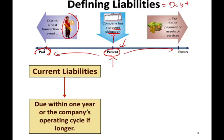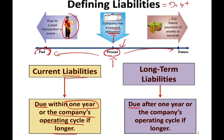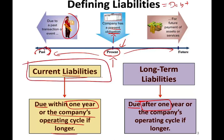Liabilities can be broken into two classes. We have current liabilities — those are liabilities due within one year, or the company's operating cycle, whichever is longer. We assume one year is longer than the company's operating cycle, so we can say they're due within one year. Long-term liabilities are due after one year. In this session and the next few sessions, we will focus on current liabilities, then we will cover long-term liabilities.